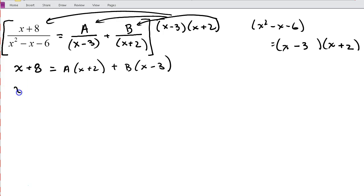So the first value for x that I'm going to use is 3. And the reason I pick 3 is because when I plug it in over here, this is going to be 0. So my b is going to cancel out. So when I have x is equal to 3, I have 11. It's 3 plus 8 is equal to 5a. It's 3 plus 2, 5a, which means that a is going to be 11 fifths.